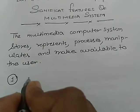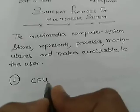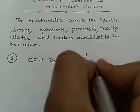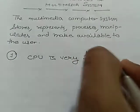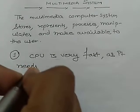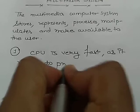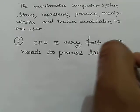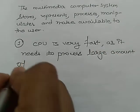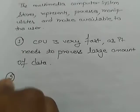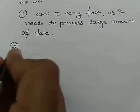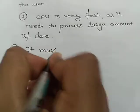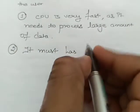Number one: a multimedia computer system's CPU, that is the central processing unit, is very fast, as it needs to process a large amount of data. Number two: it must have a huge storage capacity.